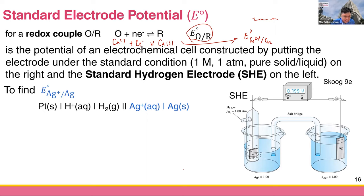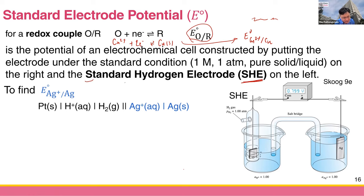So what is a standard electrode potential? It is the potential of an electrochemical cell constructed by putting the electrode under standard conditions — one molar solution, one atmosphere of gas, pure solid and liquid — on the right-hand side, and the standard hydrogen electrode (SHE) on the left-hand side. Sometimes you will see people use 'normal hydrogen electrode' — that's the same thing.